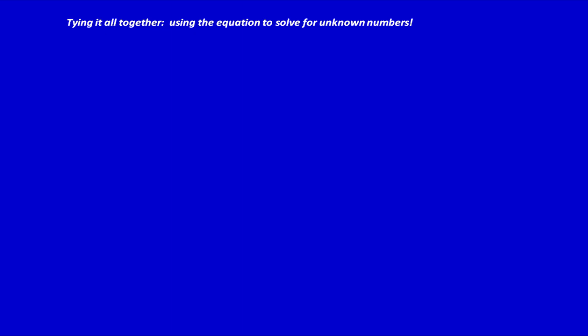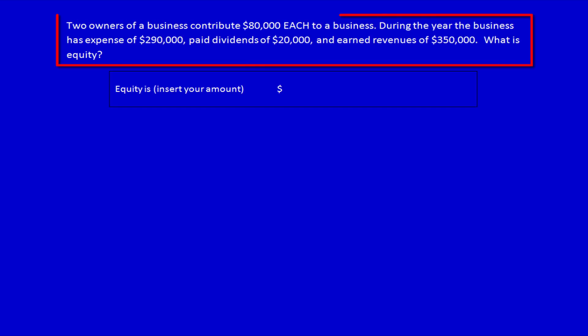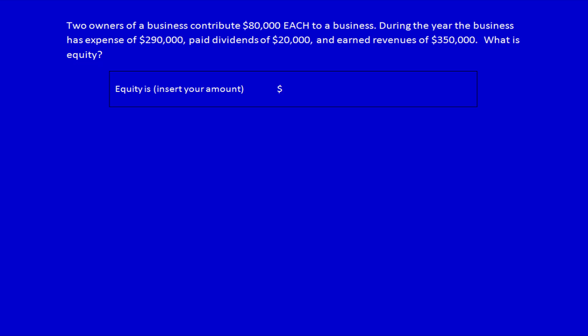Now let's use the equations and the flowchart that we just developed in order to solve for unknown numbers. Two owners of a business contribute $80,000 each during the year. The business has expenses of $290,000, paid dividends of $20,000, and earned revenues of $350,000. What is equity?